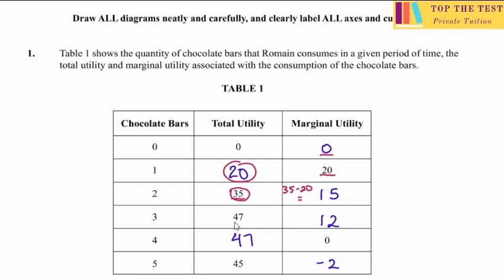As we move from the second to the third chocolate bar, they gave us a TU of 47. To calculate the marginal utility, it would be 47 subtract 35. Remember, the marginal utility is the change in total utility as we consume one more unit.